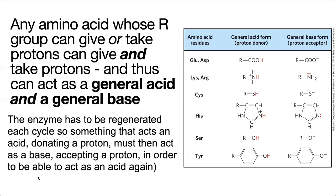A confusing thing for many people is that any amino acid whose R group is protonatable — so it can give or take protons — must by definition be able to give and take protons, meaning that it can act as both a general acid and a general base.